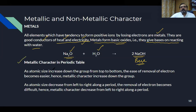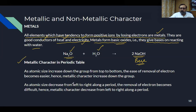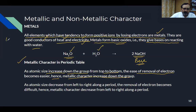What is the trend of metallic character in the periodic table? Elements that lose electrons easily are more metallic. As atomic size increases going down a group — for example, lithium, sodium, potassium, rubidium, cesium in Group 1A — it becomes easier to remove electrons, so metallic character increases going down the group.